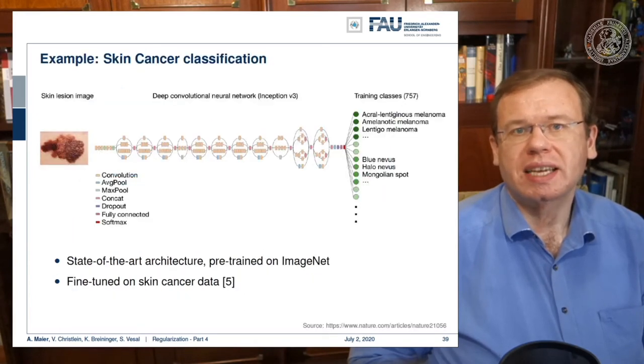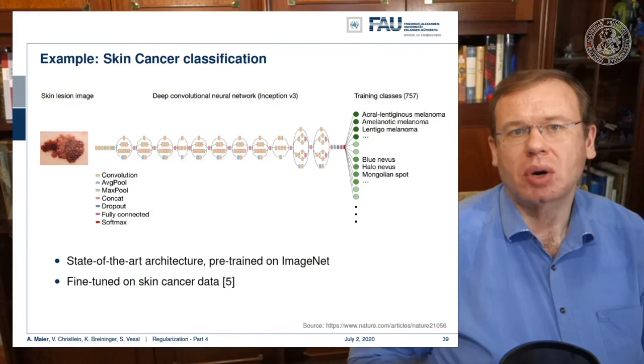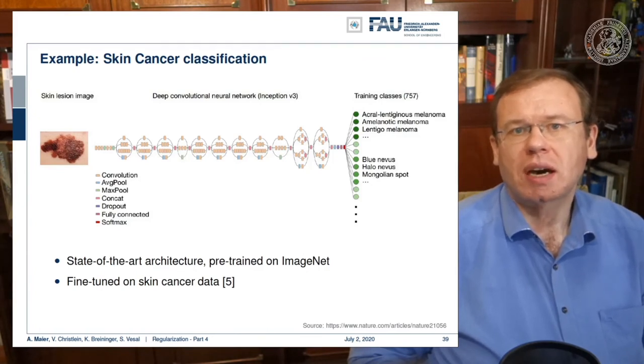One example here is skin cancer classification. They use a deep convolutional neural network based on Inception v3. They have a state-of-the-art architecture that was pre-trained on ImageNet. Then they fine-tune it on skin cancer data. So they essentially take the network and what you have to replace is essentially the right-hand part. The training of the classes is something that you won't find on ImageNet. So there you have to replace the entire network because you want to predict very different classes. Then you can use a couple of fully connected layers in order to map your learned feature representations to a different space.